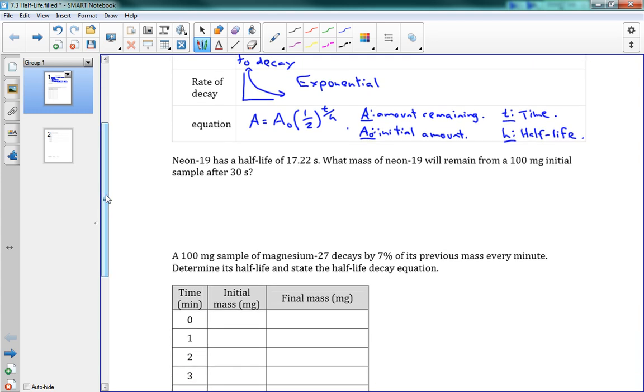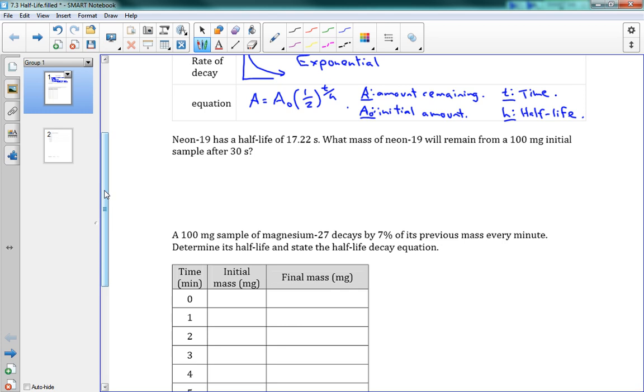All right, we'll try an example here. Neon-19 has a half-life of 17.22 seconds. What mass of neon-19 will remain from a 100 milligram initial sample after 30 seconds? So let's see. We have the half-life is 17.22 seconds. T is equal to 30 seconds. We're waiting for 30 seconds. And we have the initial amount, A naught, is equal to 100 milligrams.